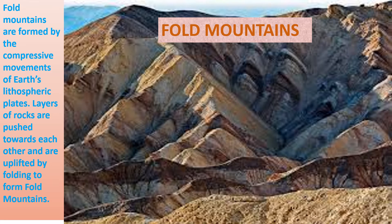Mountains are landforms that are raised steeply, forming peaks above the surrounding land. You can see the slopes which are raised from the surrounding area. Most mountains are formed as a result of earth movements like folding, faulting, or volcanic eruptions. So these three kinds of mountains we can see around us.